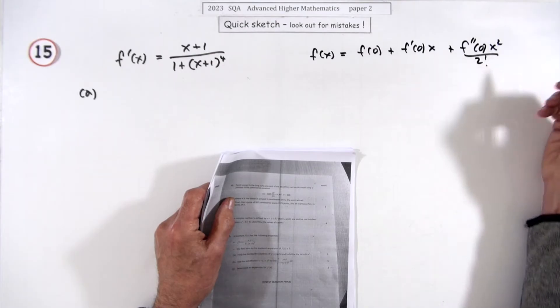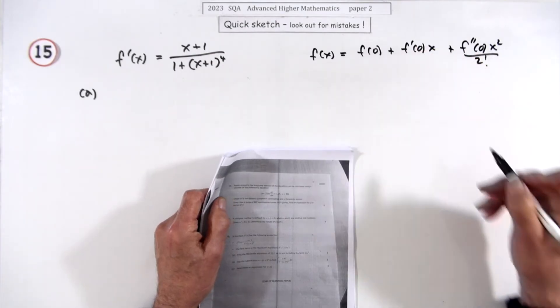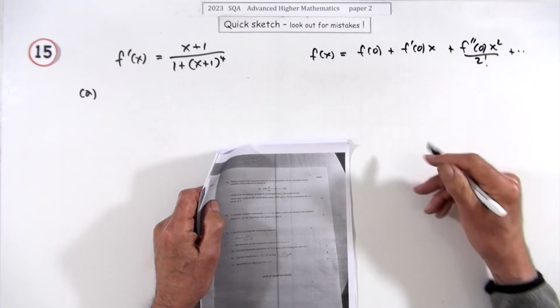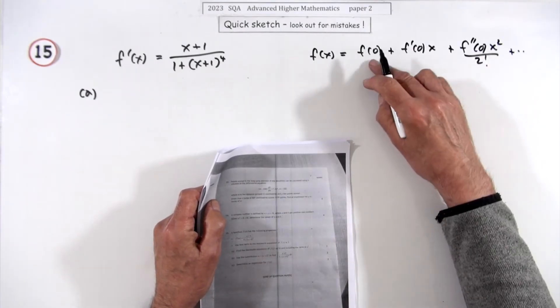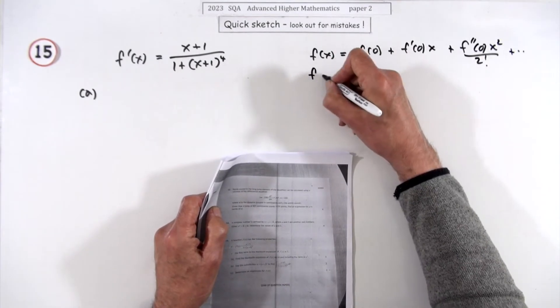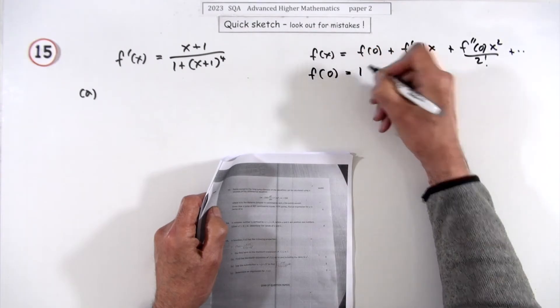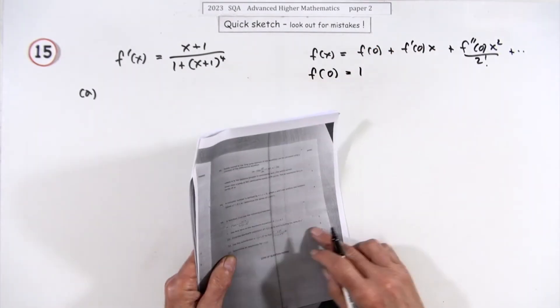Because that's over 1! and 0! they don't matter, plus etc. So the first term being one means that f(0) equals one.